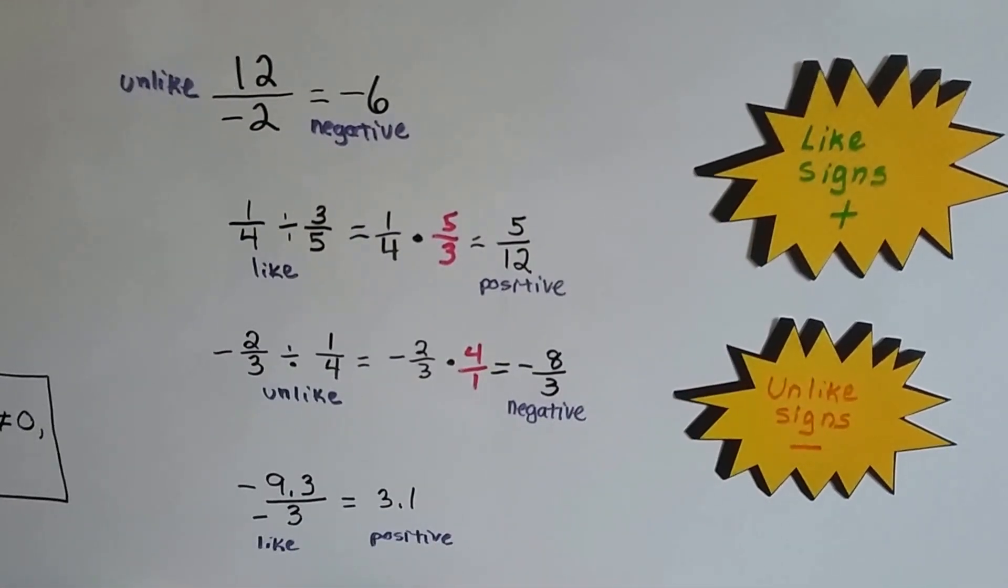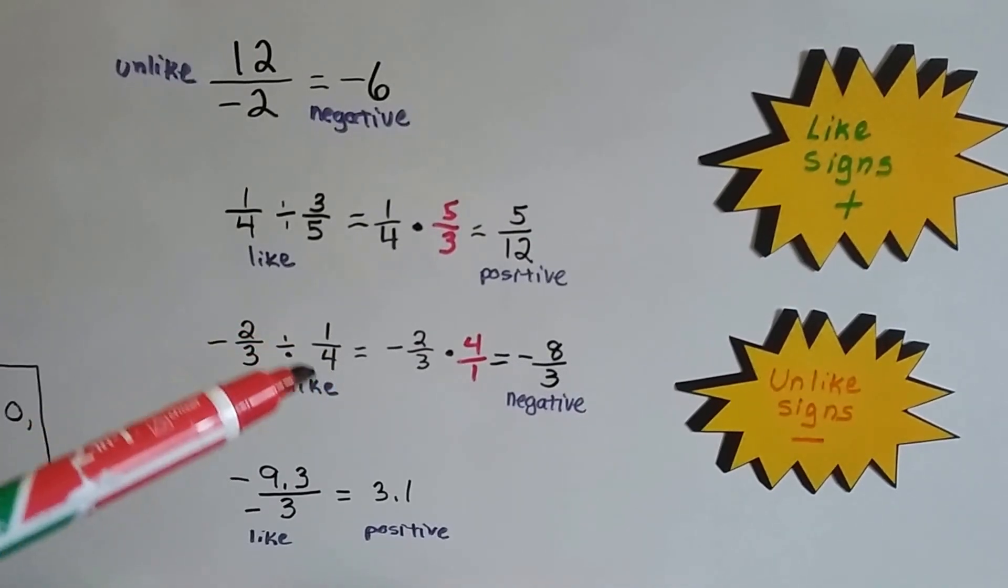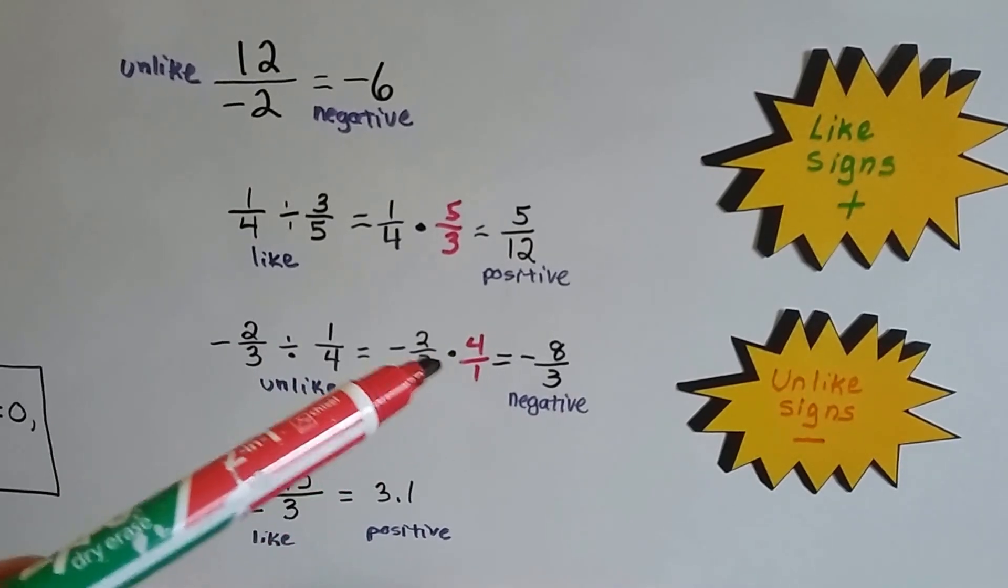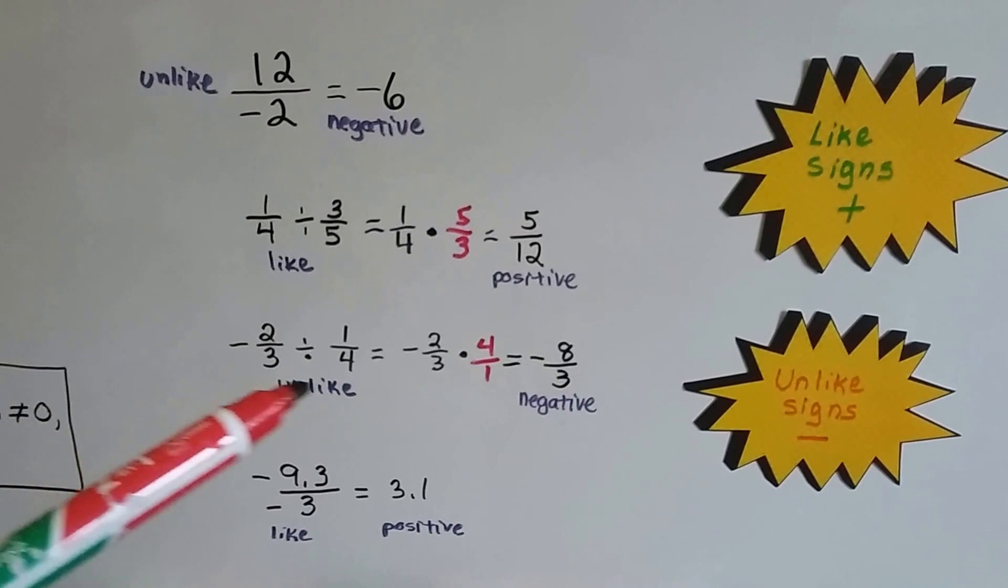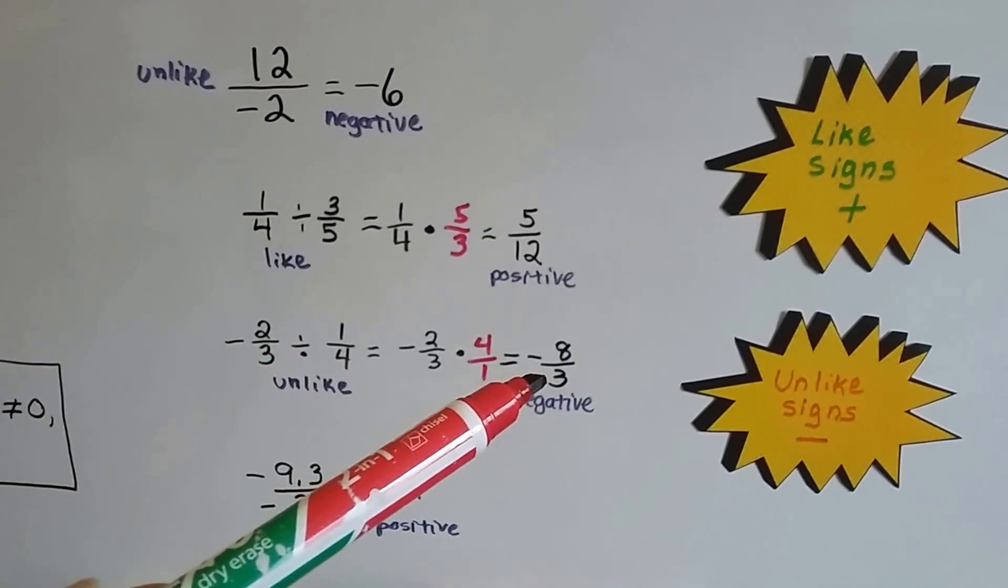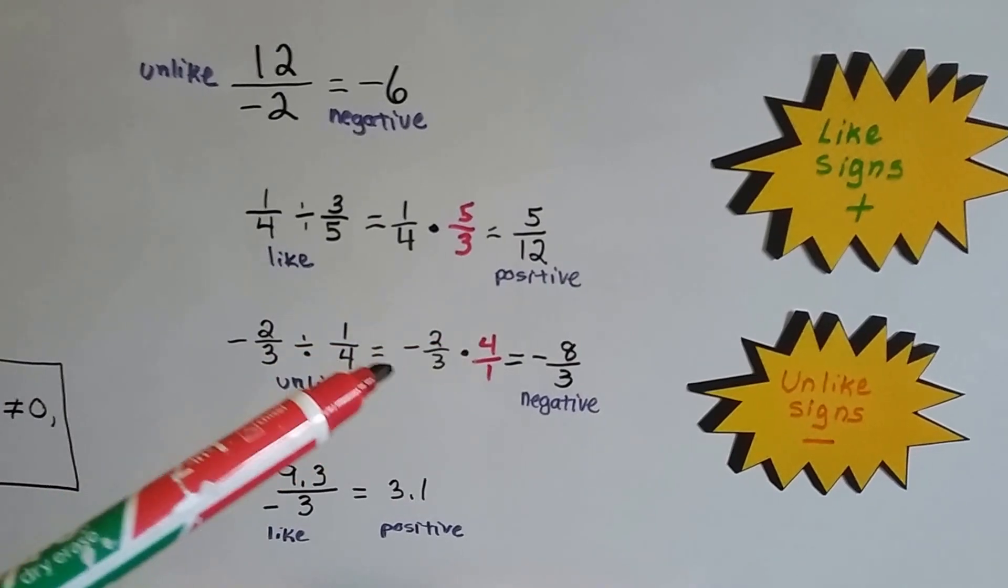Unlike signs are negative. If we have a negative 2 3rds divided by 1 4th, we're going to flip this 1 4th around to be 4 over 1 and multiply it. And they're unlike signs because we have a negative and a positive, so our answer is going to be a negative.